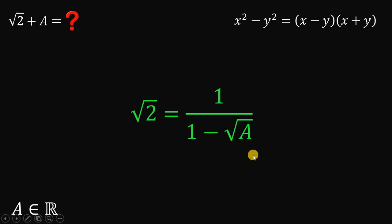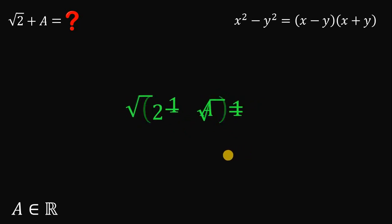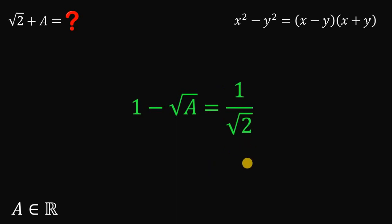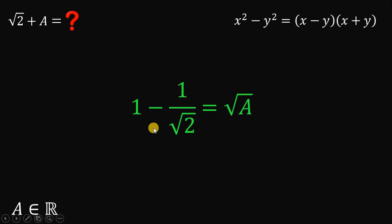Next, we isolate square root of a. To do that, let's multiply both sides by 1 minus square root of a, and then divide both sides by square root of 2. Rearranging, we get square root of a equals 1 minus 1 over square root of 2.